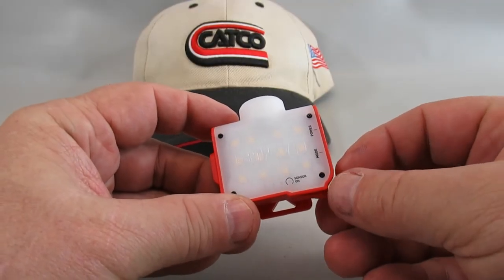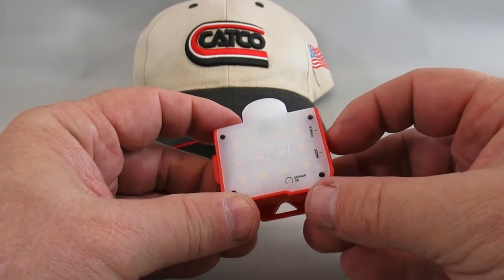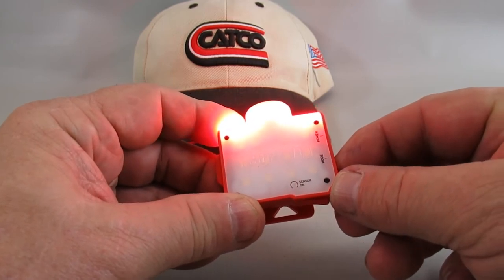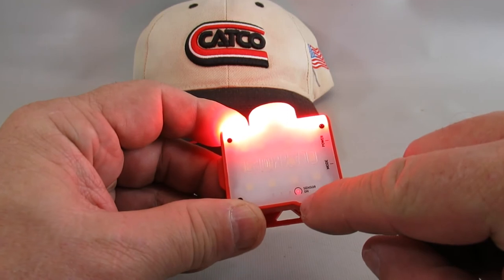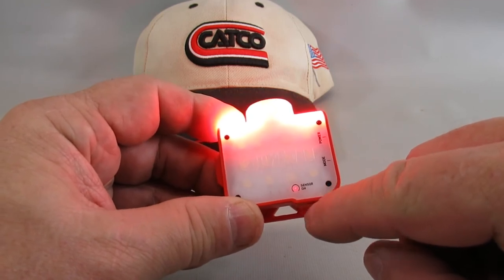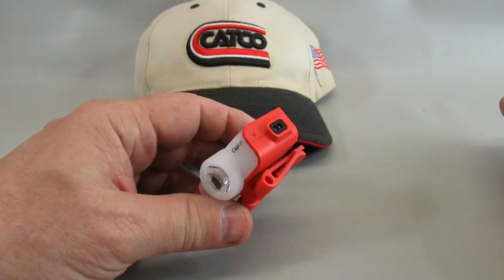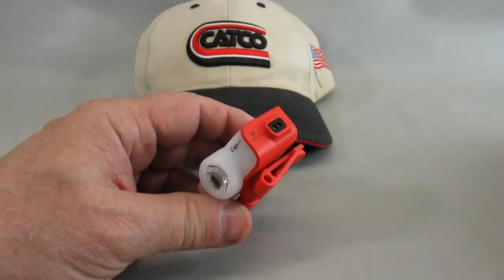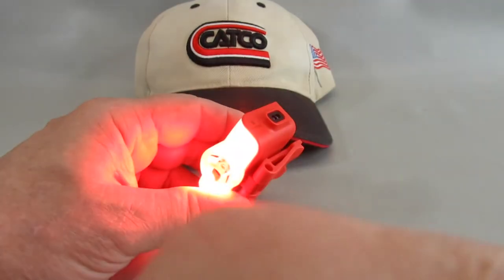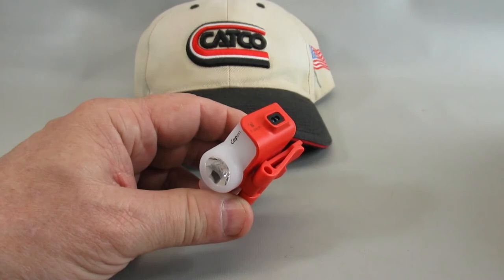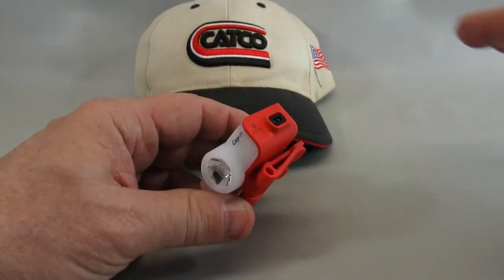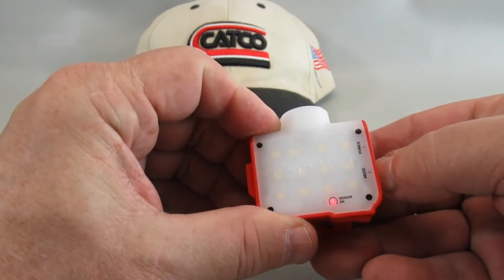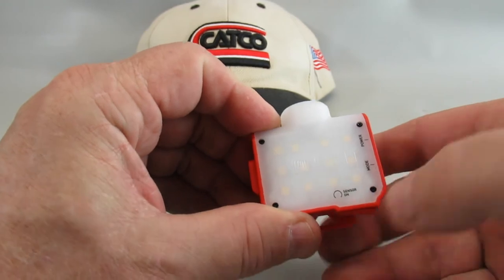Now I'll demonstrate how the sensor works for hand waving. Turn it on, then hold the mode button down for two seconds. The sensor light comes on, allowing you to turn it on and off with a hand wave. To shut the sensor off, hold the mode button down for two seconds and the sensor light goes off.